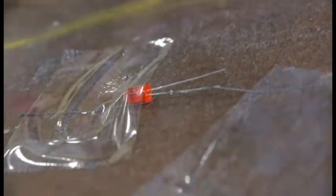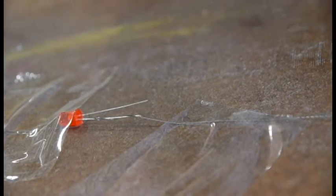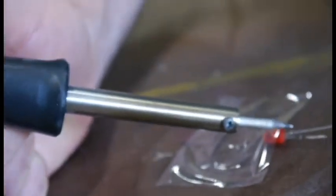Alright, so I'm taping down the component and the thread. Because this is not traditional thread, it wants to always stay straight because it's steel. So it's got a little bit of a memory to it. So you can see I've tied a knot up here. And then I've coiled it down to the end. We've taped each end.